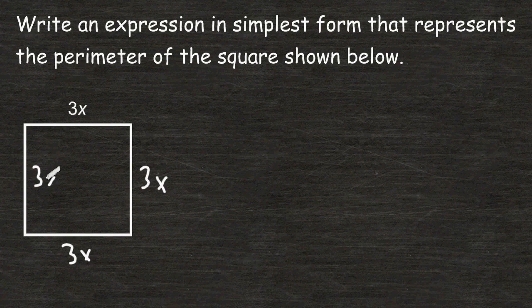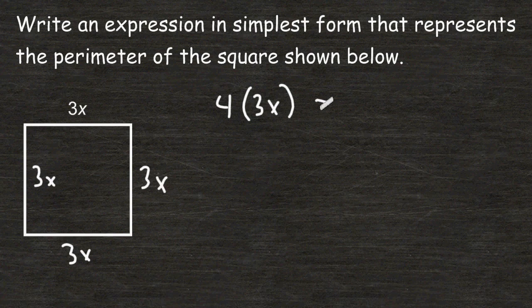So really, we have four sets of 3x. And if we multiply 4 by 3x, that would be equal to 12x. So 12x would be an expression in simplest form that represents the perimeter of the square.